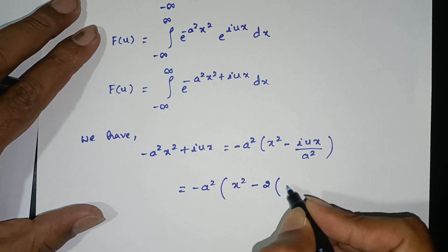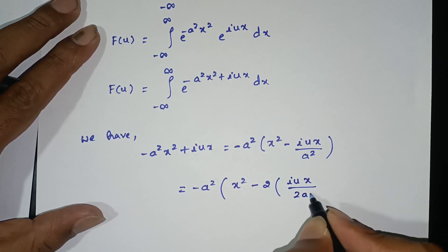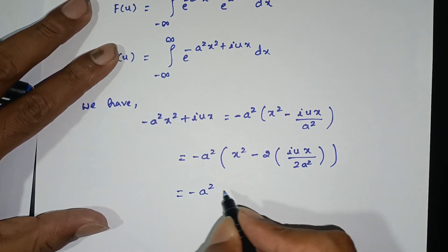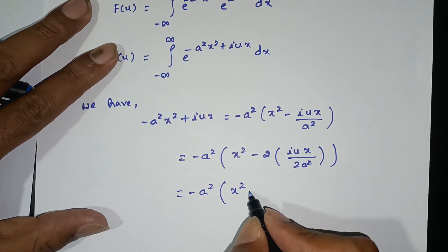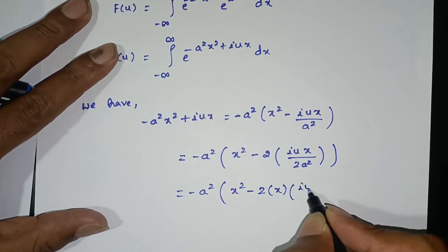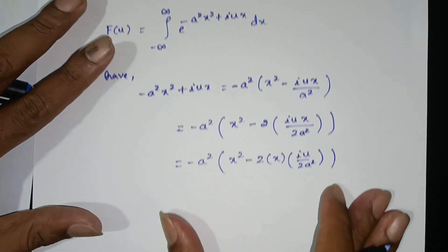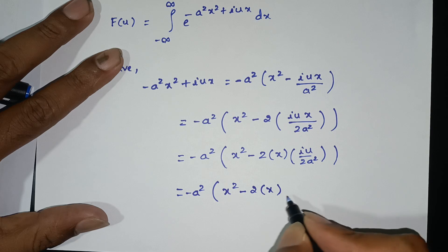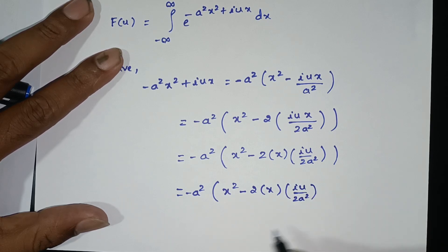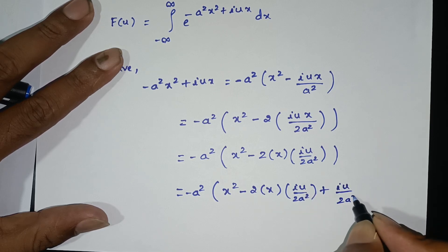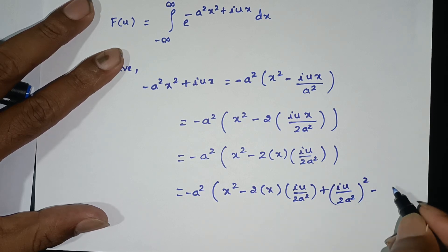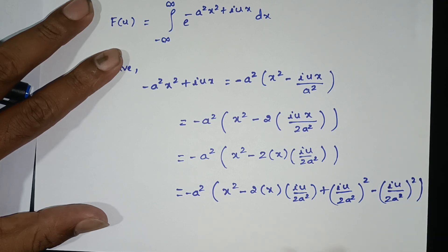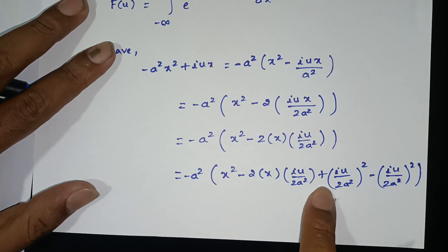We introduce the completing the square technique. We have minus a square x square plus iux. Introduce 2: 2 into iux divided by 2a square. We write minus a square times x square minus 2 times x times iu by 2a square. Then we add and subtract the term iu by 2a square whole square to complete the square.